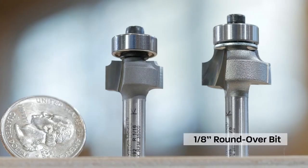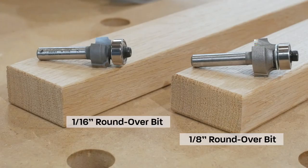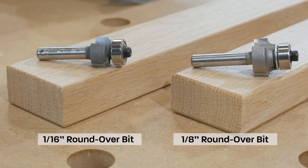The 1/8th inch roundover bit is double the size of the 1/16th inch roundover bit, but it's still very small. When you see the results side by side, you can see the difference.